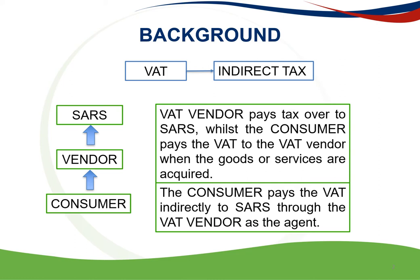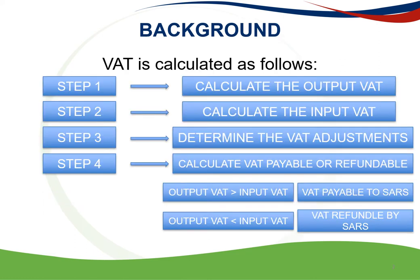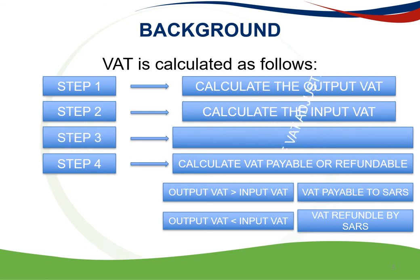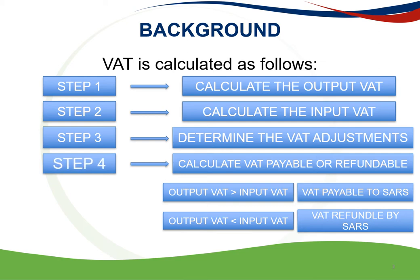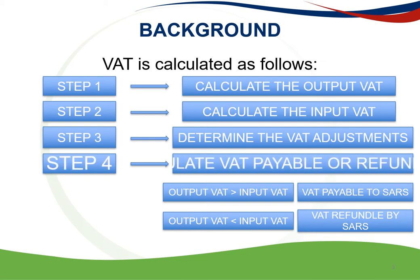VAT is a tax on the consumption of goods and services in South Africa. Value-added tax is calculated as follows: Step 1 is to calculate your output VAT. Step 2 is to calculate your input VAT. Step 3 is to determine the VAT adjustments if there are any. Step 4 is to calculate either the VAT payable or refundable to SARS.